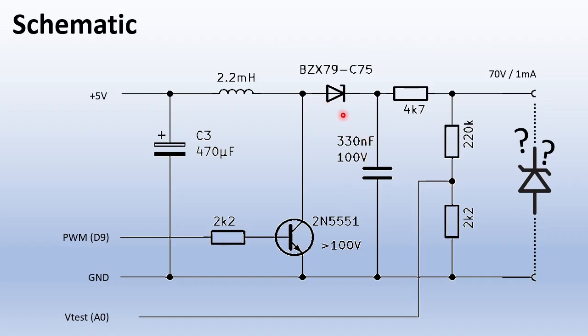Now this diode looks a bit strange. It is a Zener diode. This is to limit the output voltage. If the transistor is on, the Zener is connected in parallel with the capacitor. So the capacitor can never be more than 75 volts.